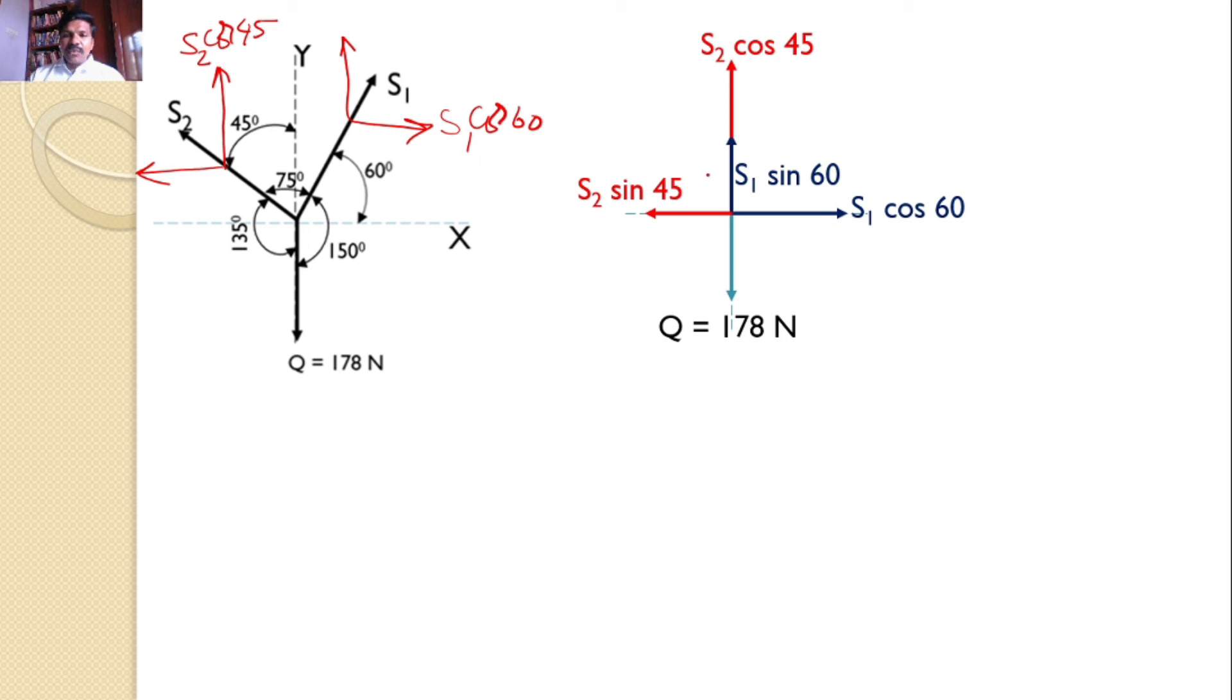Now I can apply the equilibrium equation sigma Fx equals zero. What are the forces acting along X axis? Two forces: S1 cos 60 and S2 sin 45. I can write S1 cos 60 equals S2 sin 45. From that, cos 60 is 0.5, sin 45 is 0.707. So I can get one equation: S1 equals 1.414 S2.